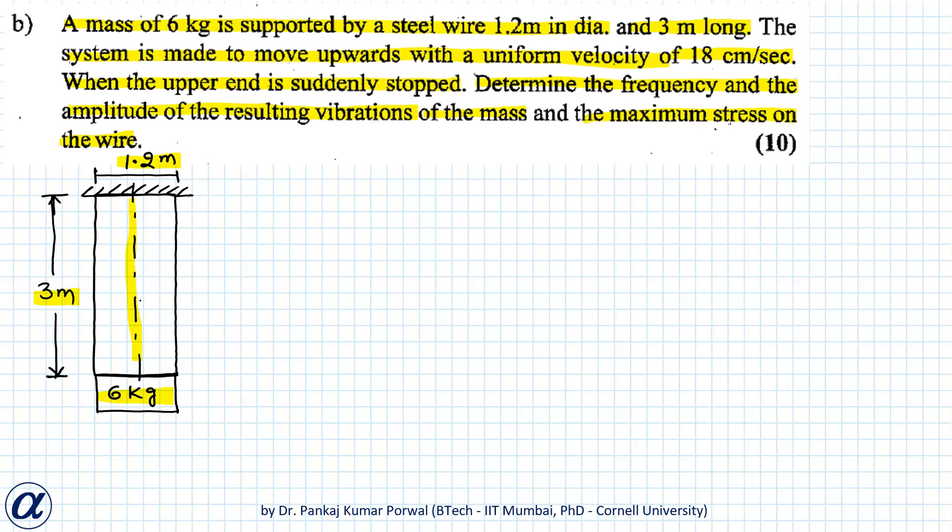Because the force on the wire is in axial direction it will behave like a bar spring and the stiffness of that bar spring is k equals to AE by L.